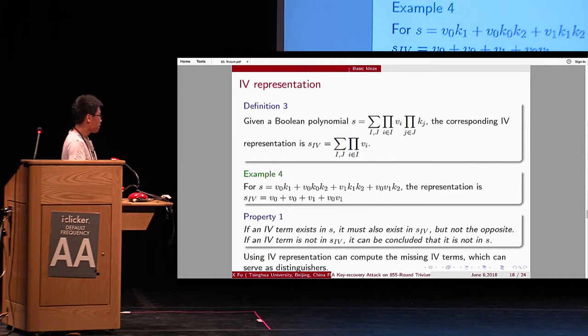So, we have a property one. If an IV term exists in s, it must also exist in s IV, but not the opposite. If an IV term is not in s IV, it can be concluded that it is not in s. So, we use IV representation to simplify this polynomial and determine the missing IV terms.